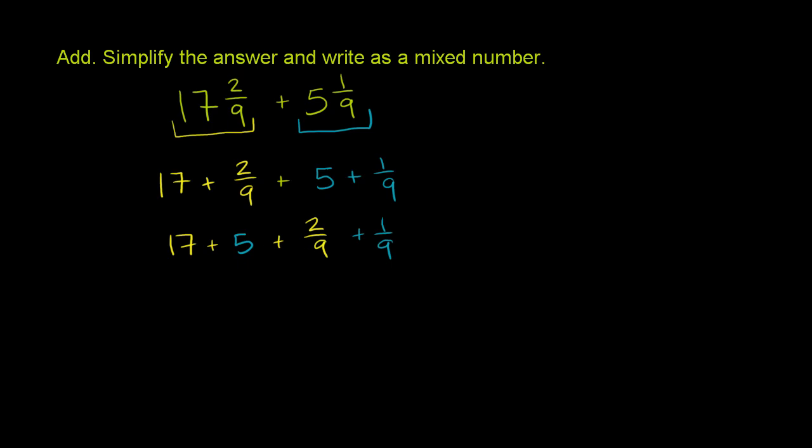And we could do this in any order. And we know what 17 plus 5 is. We've done that before. 17 plus 5 is 22. So that part right there is 22. So we have 22 plus...